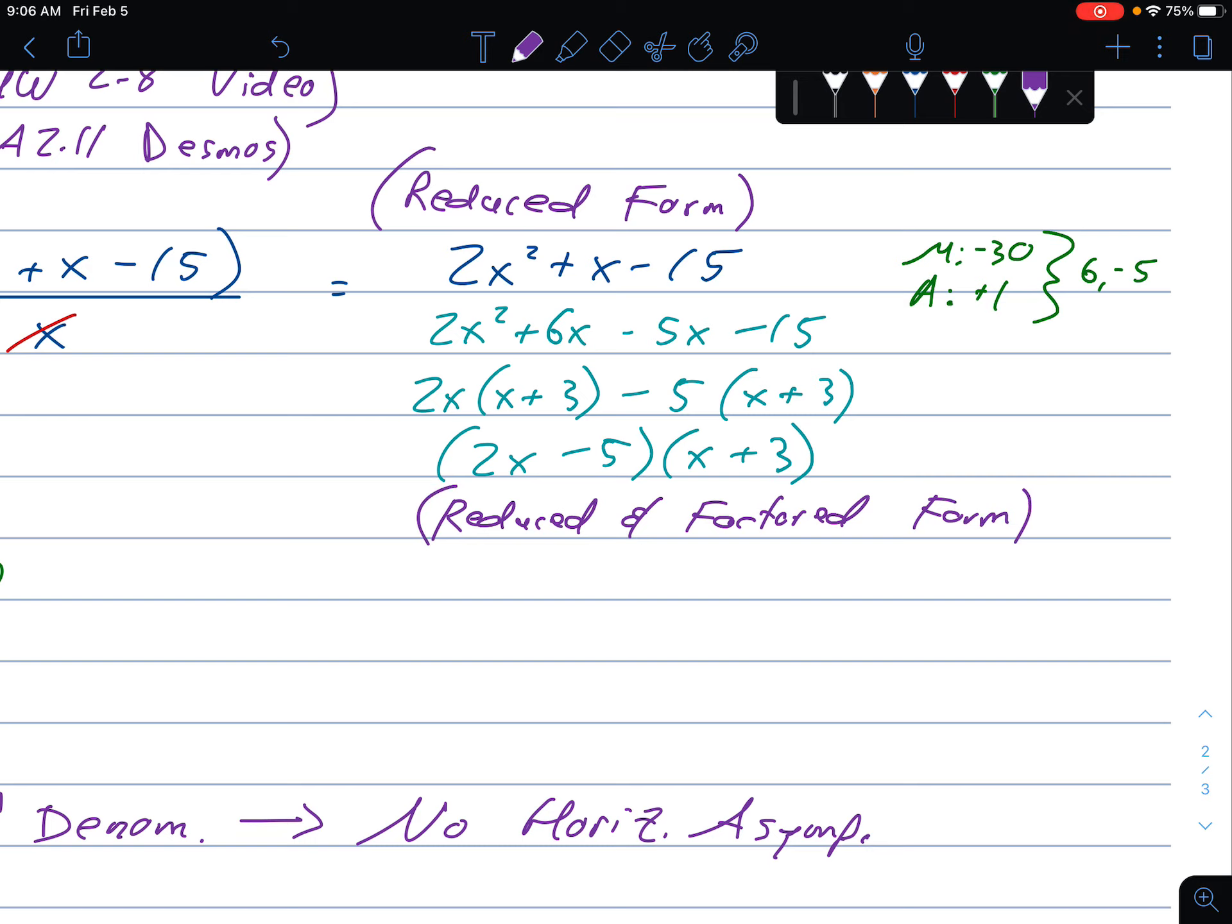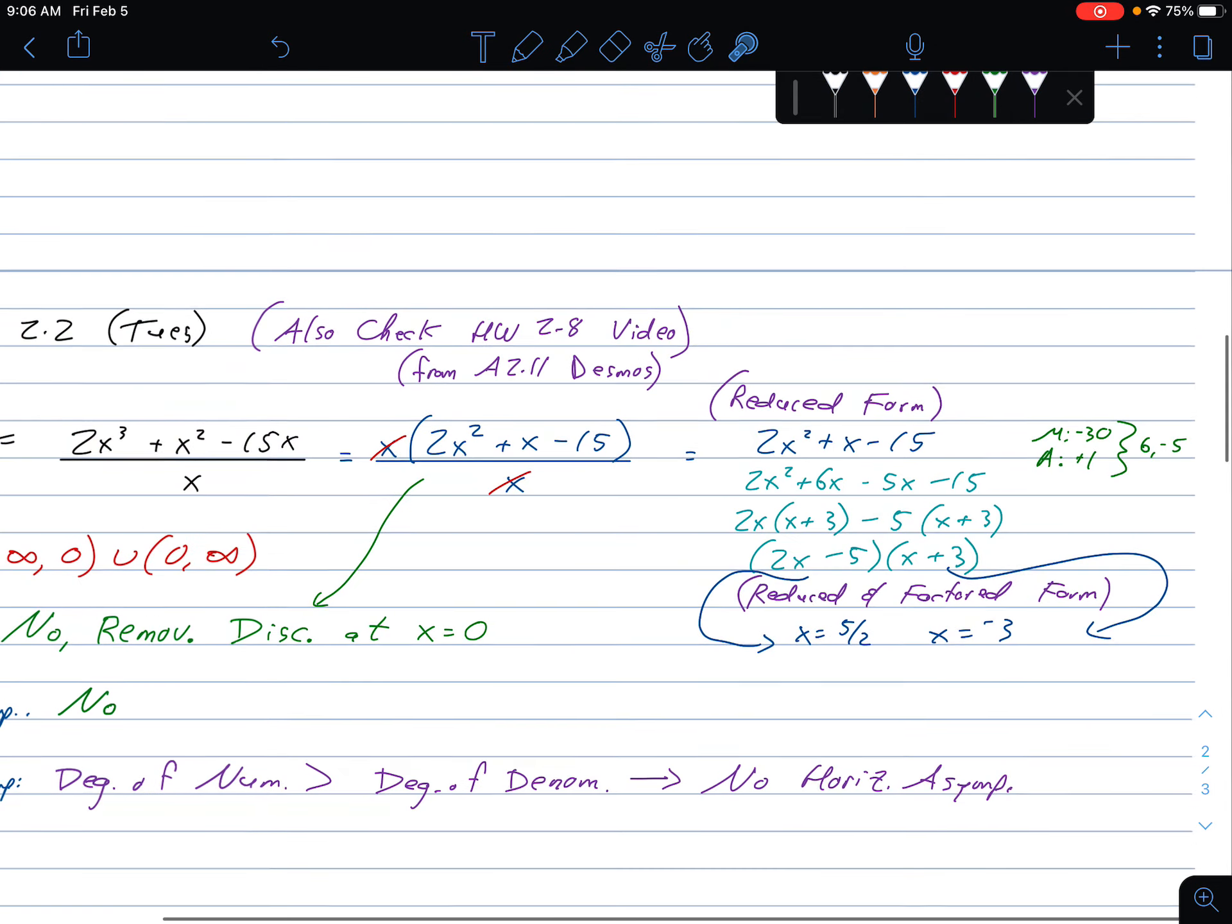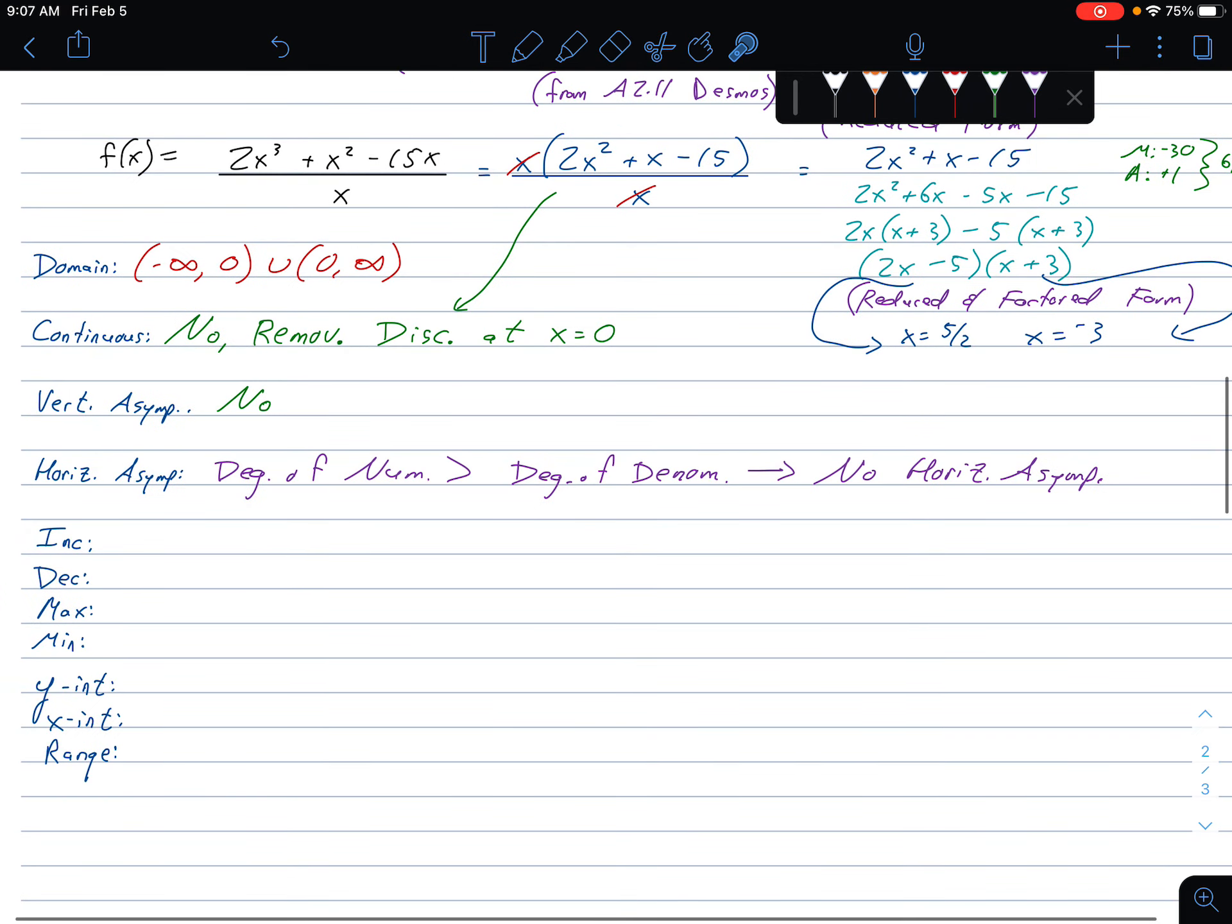The only reason I'm doing this is to help find my X-intercepts, which are 5 over 2 and negative 3. That's the numerator we're working with. This is not where my zeros are or where my domain would lack, because this is the numerator, the top, which is fine. Those two values are my X-intercepts, because once I've removed the bottom, I can find my X-intercepts there. 5 over 2 comma 0, and negative 3 comma 0. Those are my two X-intercepts.